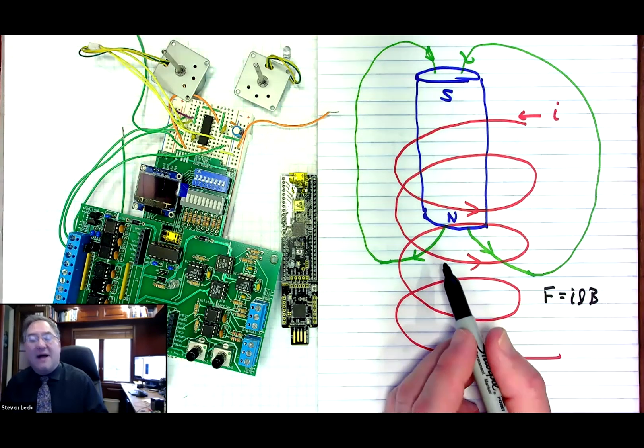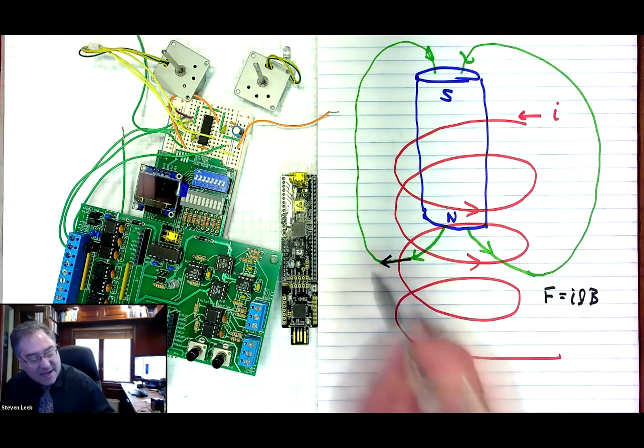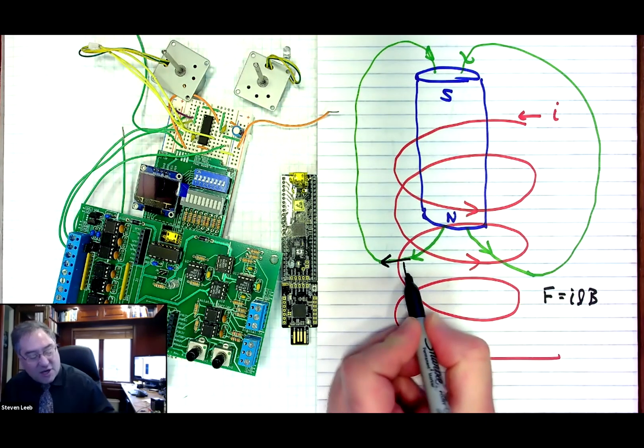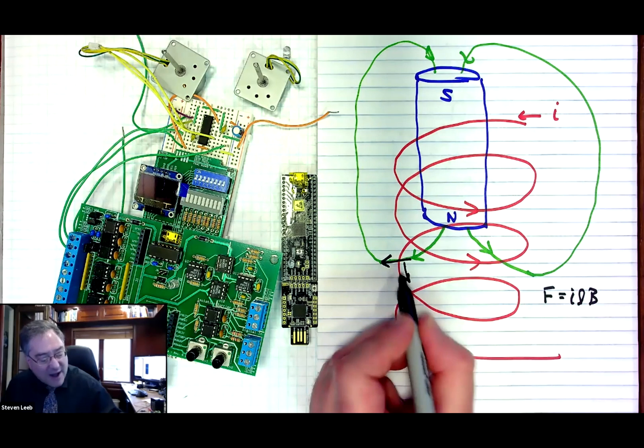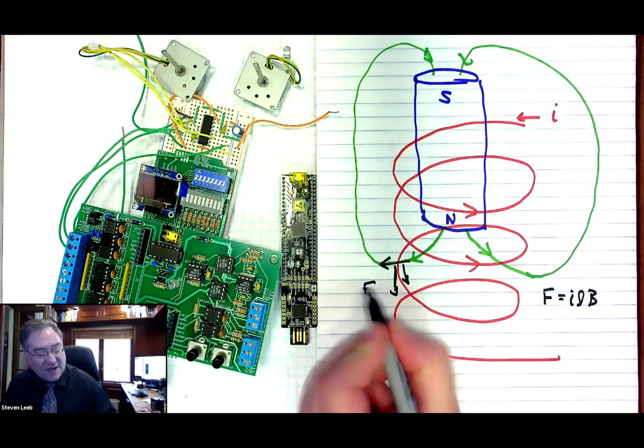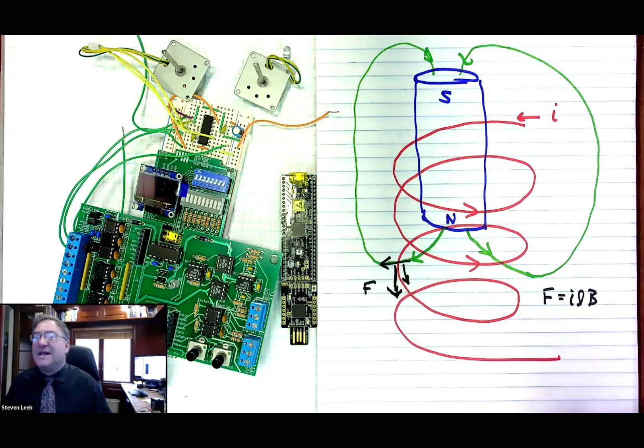So we'll talk more about that in class, but I'll tell you that if you have a field coming out this way and a current going around that way, you can, for example, use a physics trick called the right-hand rule and figure out that for this situation, the force on the wire is going to be down, which is really boring.